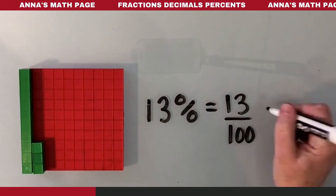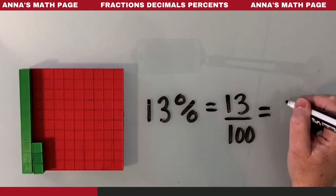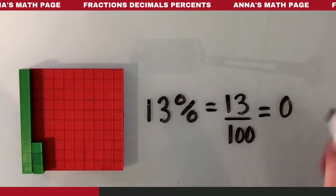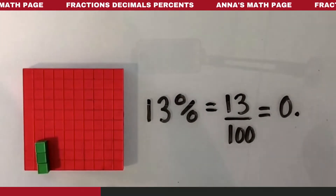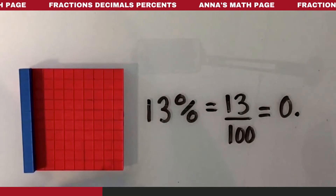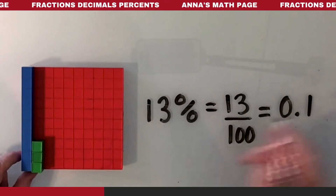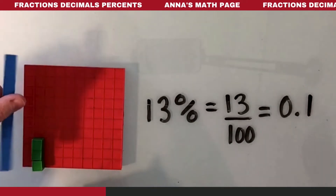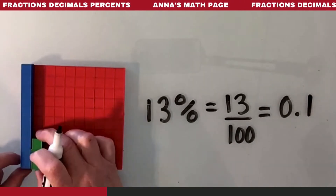Now if we want to change it to a decimal, we have zero whole ones. And we have — let's change this color again to blue — one tenth. One tenth, which is the blue one, seeing as one of them. And we have one, two, three hundredths.